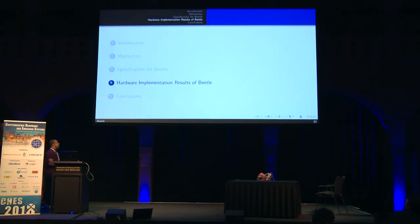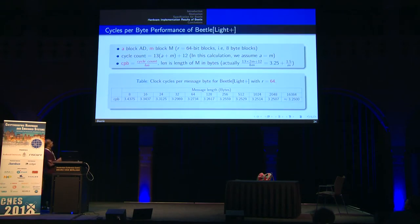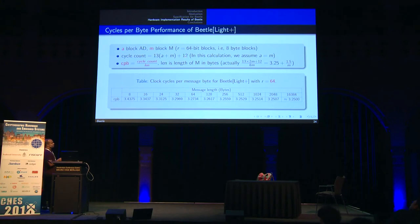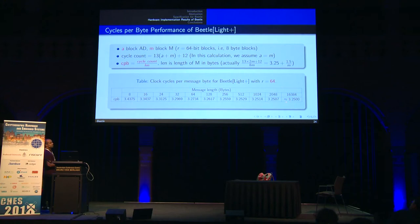Now for the hardware implementation results of Beetle. For the CPB analysis of Beetle-Light+ — same applies for Beetle-Secure+ — we assume A blocks of AD and M blocks of message, each block being 64 bits (8 bytes). The cycle count is 13×(A+M) + 12, since P144 runs for 12 rounds. Assuming A equals M, the CPB value converges to 3.25 as the message length increases.